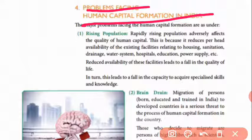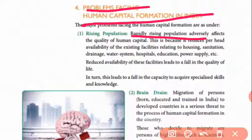The main problems are: first one is rising population, poverty, unemployment. Human capital formation is affected everywhere but the main problem is population — population is rising. Rapidly rising population adversely affects the quality of human capital.